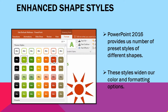Next is enhanced shape styles. PowerPoint 2016 provides us a number of preset styles — preset means styles that are already set or pre-designed — for different shapes. These styles widen our color and formatting options. As you can see in the image, there is one shape and we have a wide variety of options.